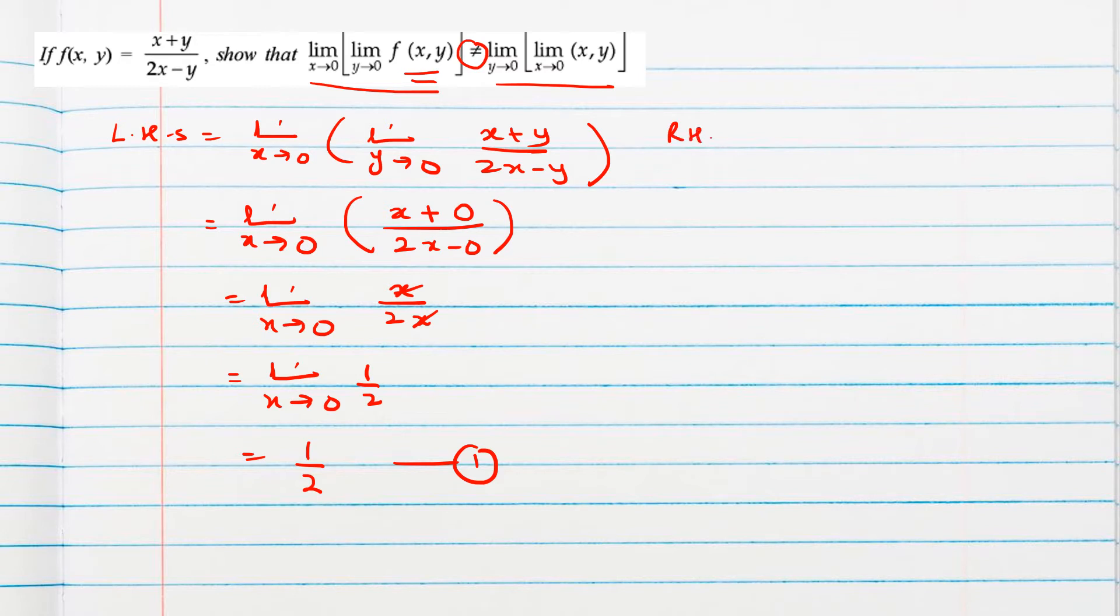Then consider the right-hand side. Now in this we have to first find the limit as x approaches 0. The function is the same: (x+y)/(2x-y).